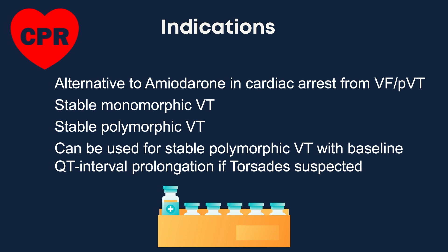Lignocaine can be used as an alternative to amiodarone in cardiac arrest from VF or pulseless ventricular tachycardia. It can also be used for stable monomorphic ventricular tachycardia with preserved ventricular function, stable polymorphic ventricular tachycardia with normal baseline QT interval and preserved LV function when ischemia is treated and electrolyte balance is corrected, and for stable polymorphic VT with baseline QT interval prolongation if torsades is suspected.